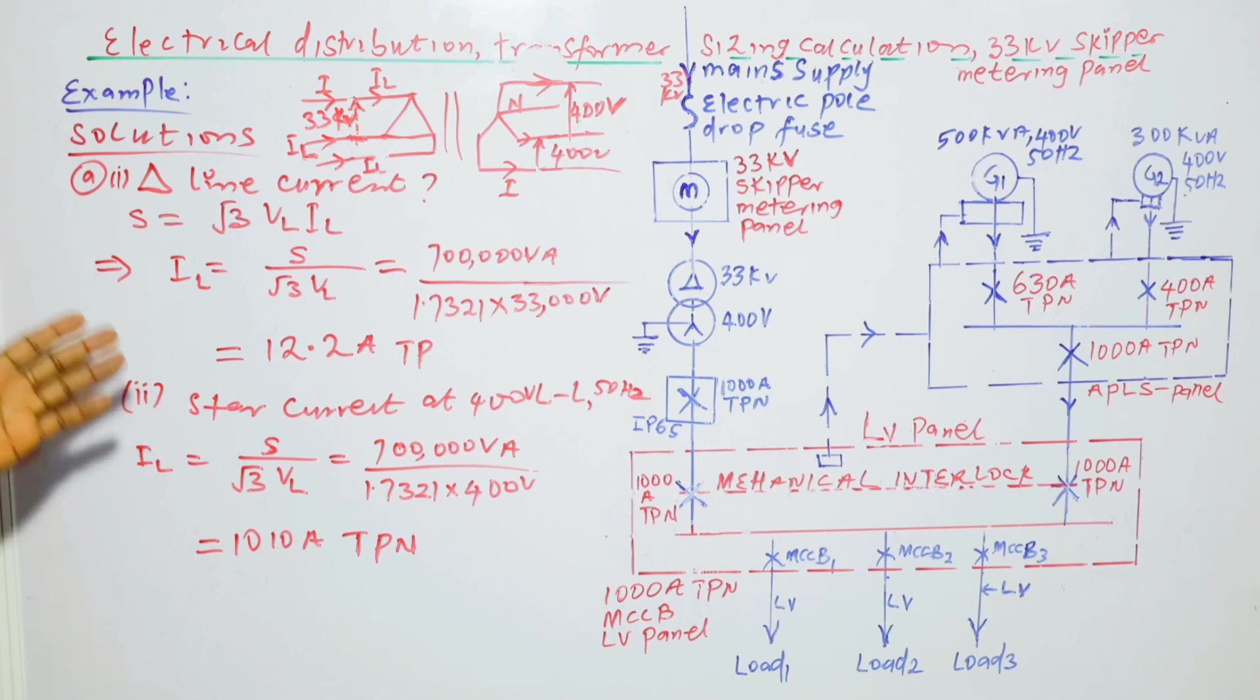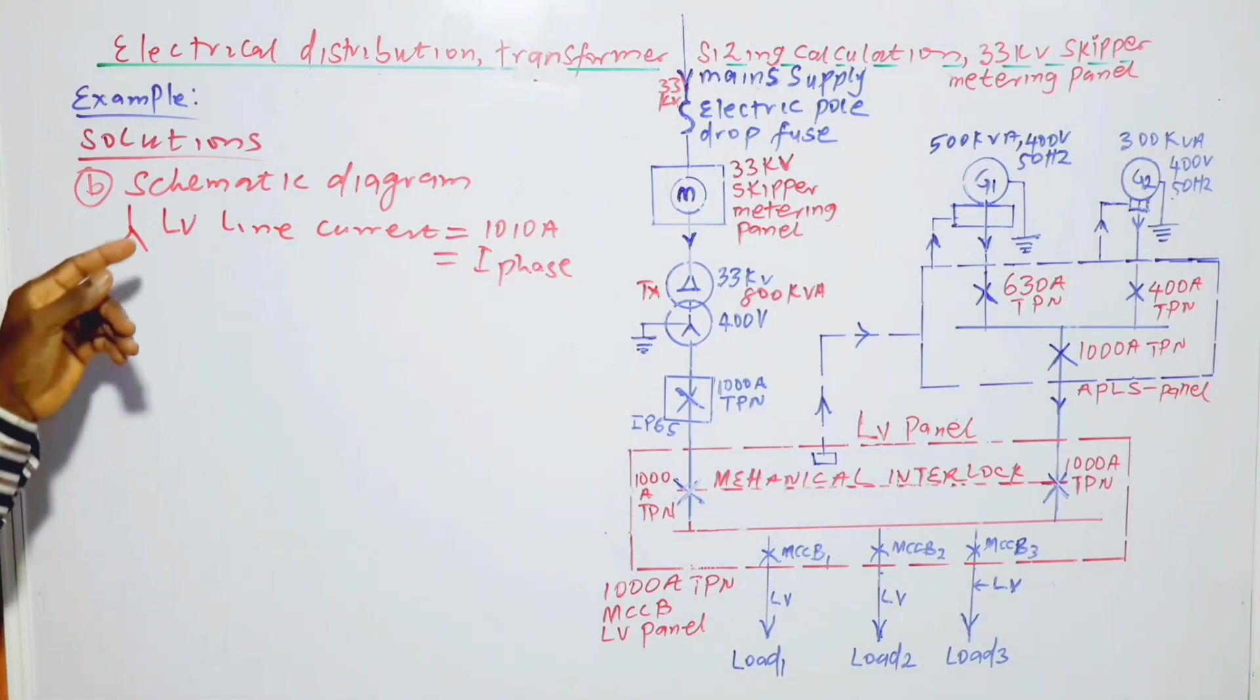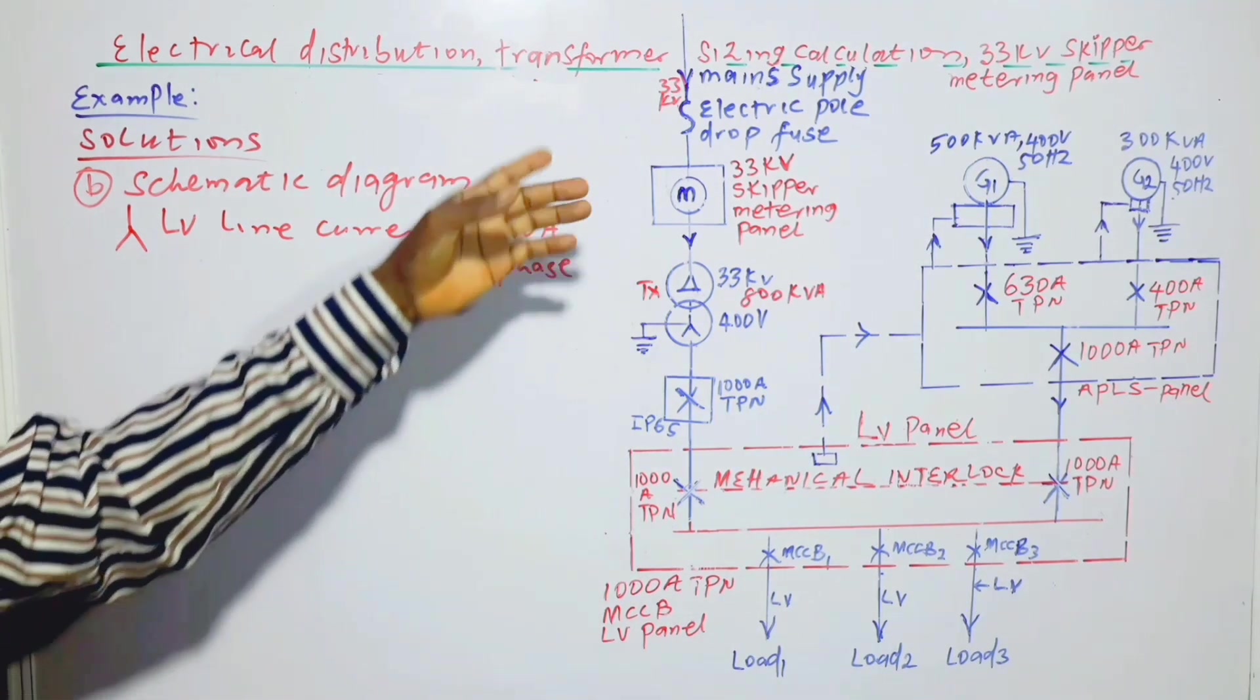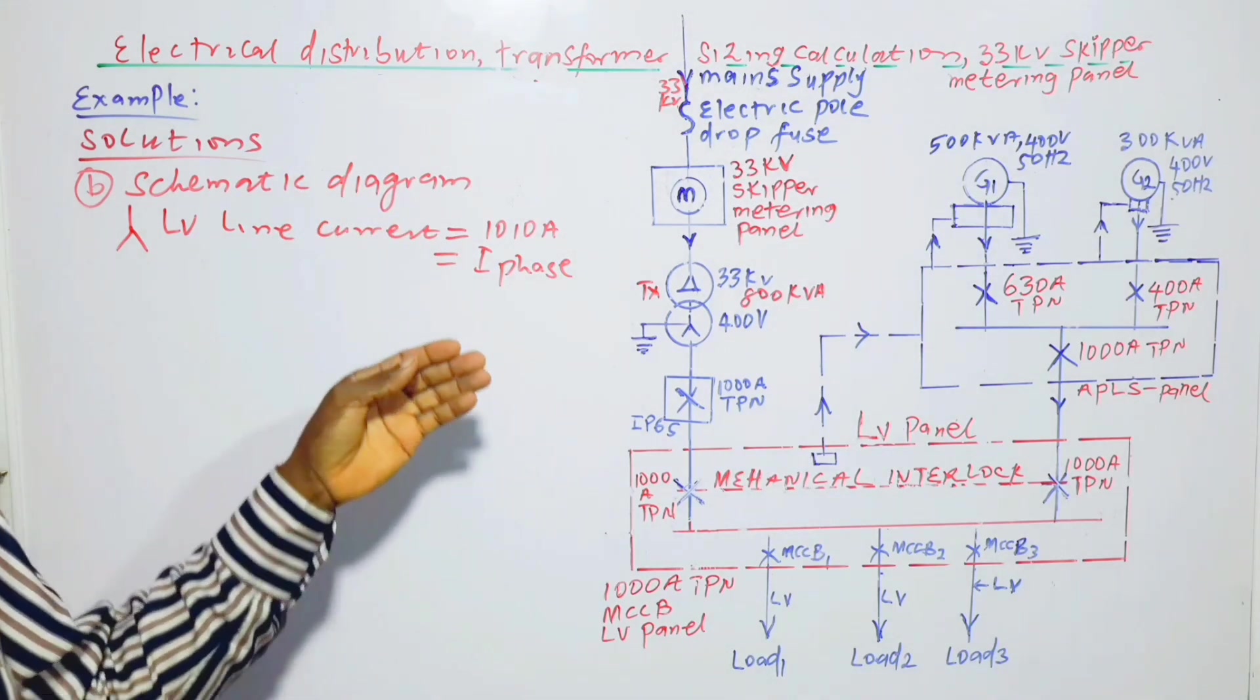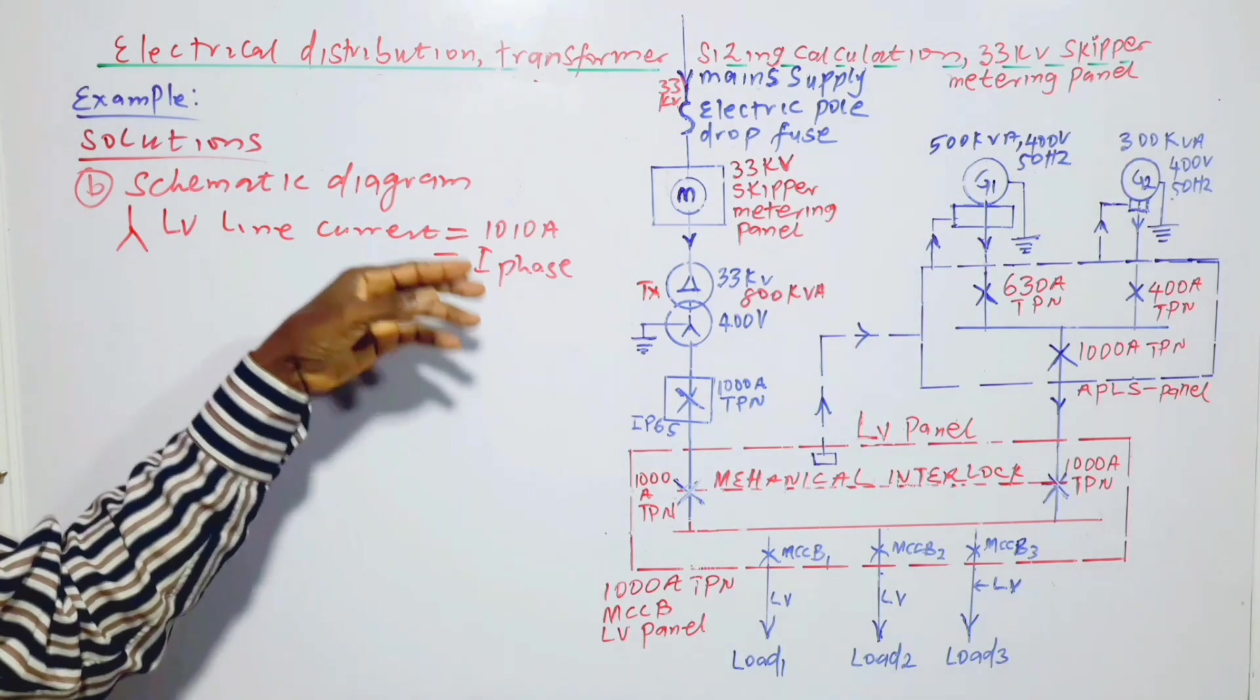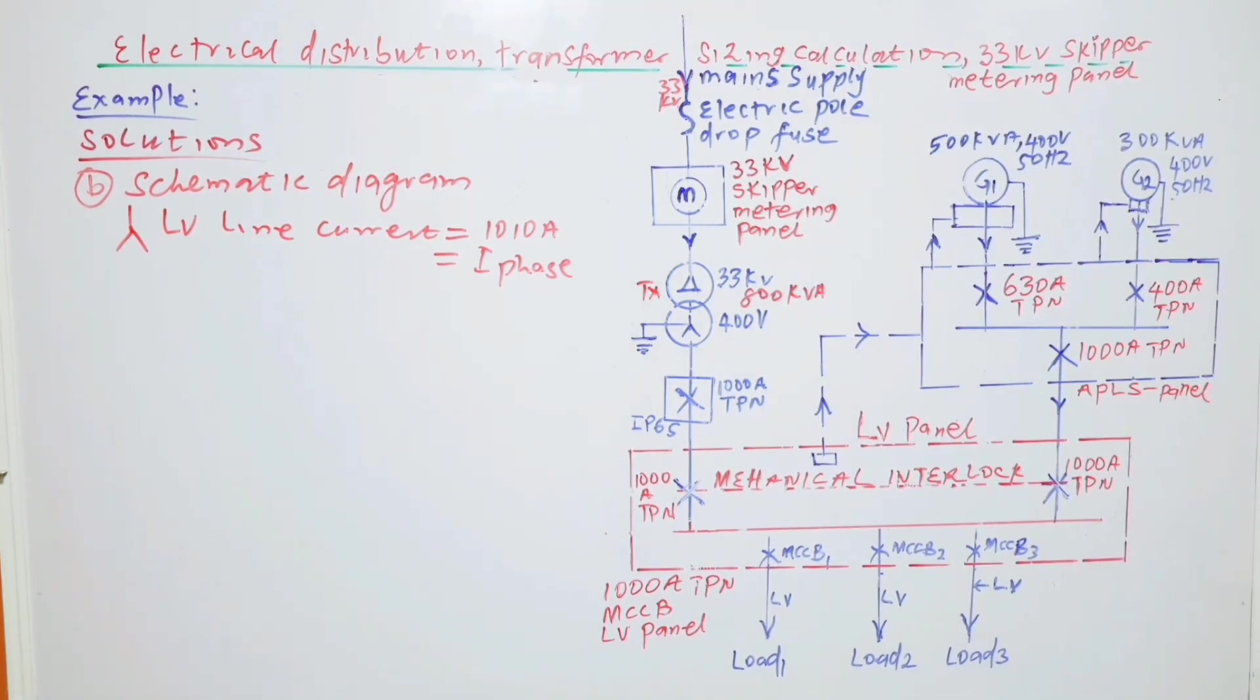But when we have a load that is not balanced, then one can calculate the neutral current. And that will be a topic for the future. So we are going to do that one in future. This is the solution to the second part of question A. Now, the schematic diagram for the system. The star LV line current, which is the same thing as phase current in star. When we have a star connection, the line current is always equal to the phase current, and it's equal to 1010 amperes. This is the load current.